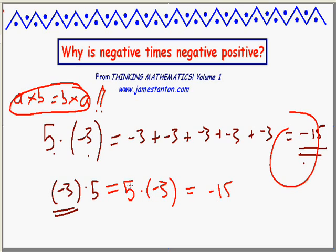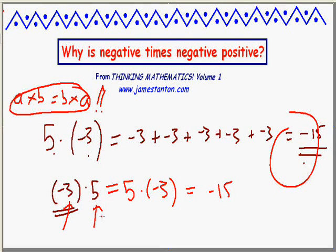It's negative 15 — there's the previous problem. So if we choose to believe that numbers are commutative with regard to multiplication, even negative ones, then we can handle negative times positive.